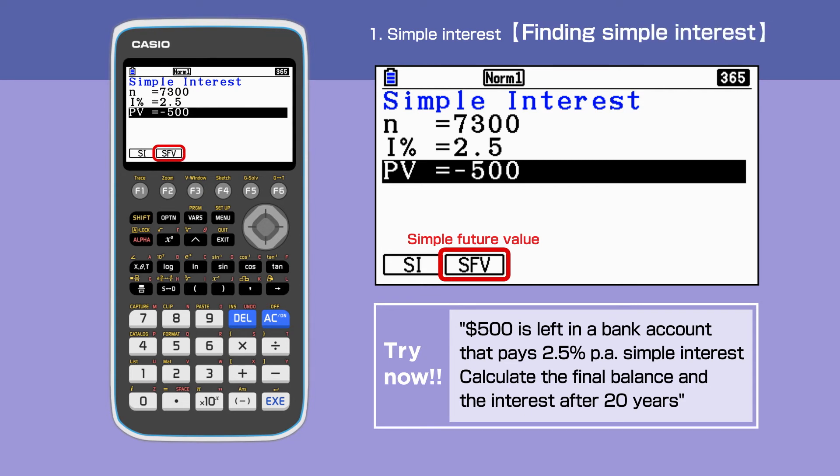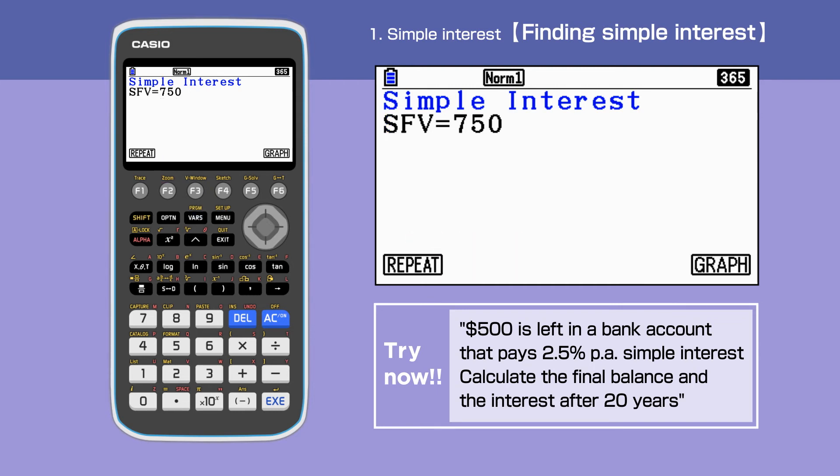Press F2 to select SFV. SFV stands for simple future value. We have got $750 for SFV. Press F1 to go back a screen.